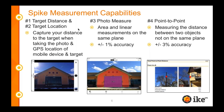Our third measurement capability, which is the most popular used one, is called photo measurement. That allows you to capture both area and linear measurements on the same plane. So in this photo example, if you're measuring the exterior of this building, you can measure the different areas, different heights, widths, lengths, and footage. It has an accuracy of plus or minus 1%, meaning it's not a 100% precise tool, but it is a very good tool for taking measurements with very good accuracy.